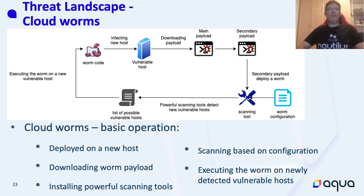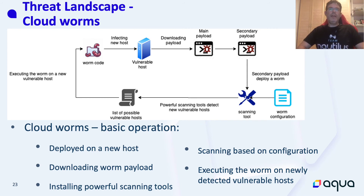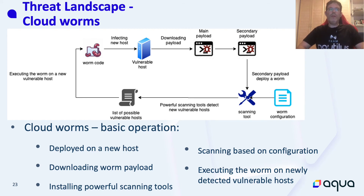In this figure, you can see that once the worm code finds a vulnerable host, it infects it with two payloads. The first payload is the main payload, usually containing malware, backdoors, and rootkits. The secondary payload deploys a mass scanner, then communicates with a C2 server to get instructions, the worm configuration, and to understand what it targets — Kubernetes, Docker, and so on. It then prepares a list of vulnerable hosts and passes it to the worm, which does basically exactly the same — hence the term worm, hence highly automated script.